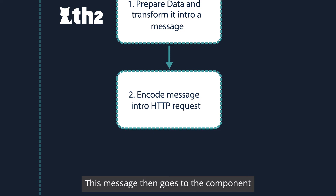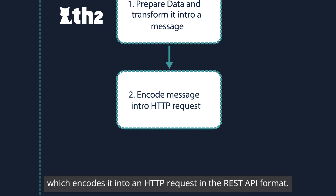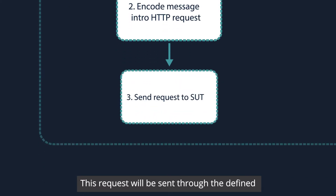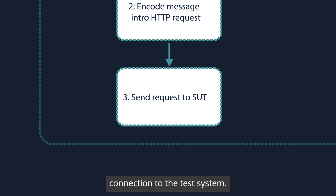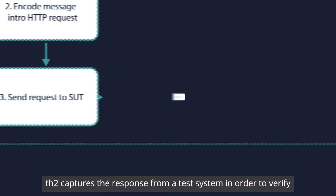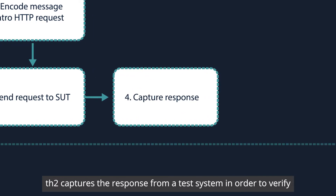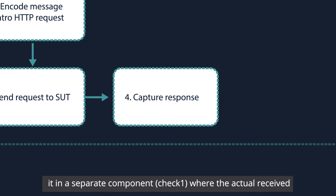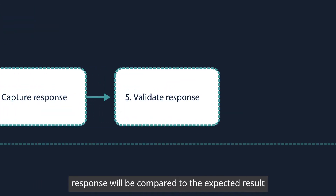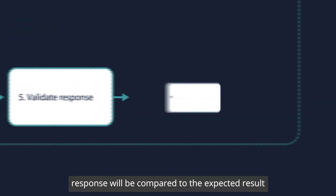This message then goes to the component which encodes it into an HTTP request in the REST API format. This request will be sent through the defined connection to the test system. TH2 captures the response from the test system in order to verify it in a separate component, check one, where the actual received response will be compared to the expected result predefined in a test script.